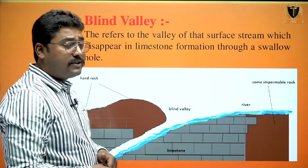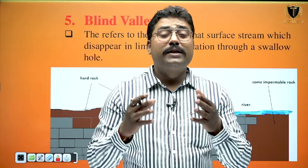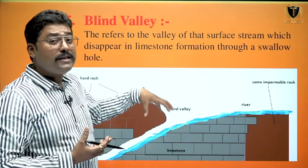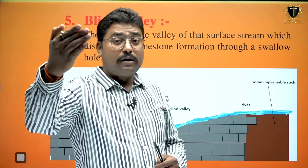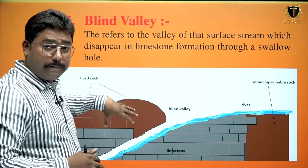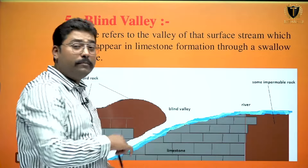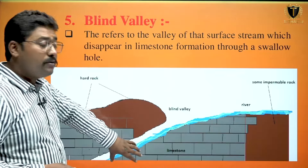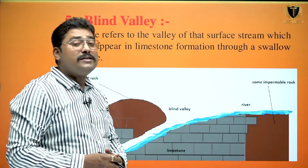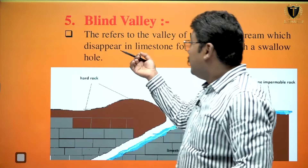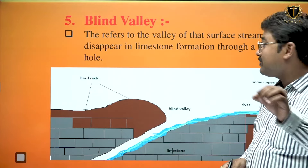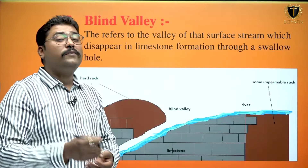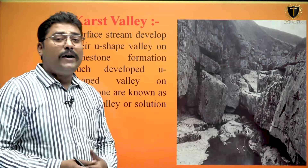Moving on to the next feature: the blind valley. Blind valley means the valley which disappears with the running water — suppose a river is flowing and suddenly finds a sinkhole mid-way and the river slides down, so the valley of the river which was visible over here is going to disappear. That disappeared valley is considered as a blind valley. It refers to the valley of a surface stream which disappears in limestone formation through a swallow hole.